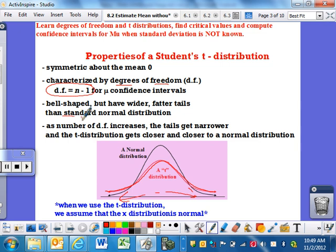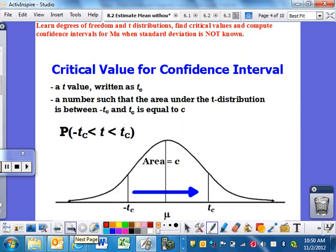Like I said, the curve is just a little bit flatter, and as the number increases, the tails do get narrower. Essentially the more data you have, the more accurate or closer to normal it is. So let us try to find a confidence interval.